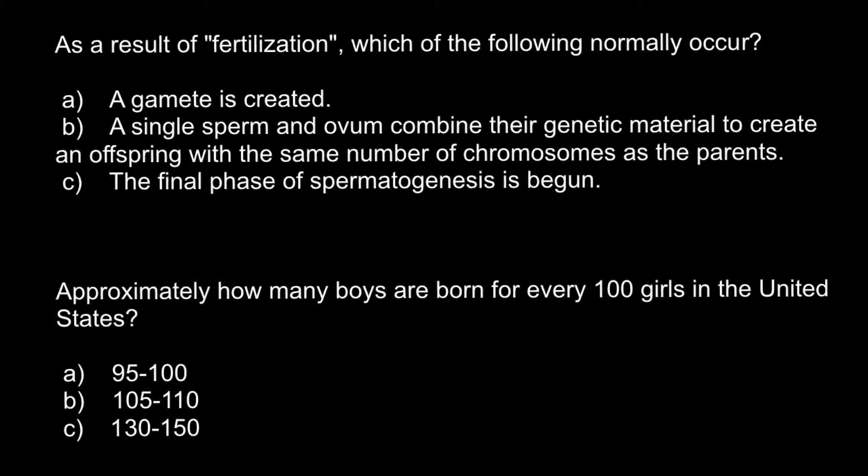Here is the first question: As a result of fertilization, which of the following normally occurs? Answer A: A gamete is created. Answer B: A single sperm and ovum combine their genetic material to create an offspring with the same number of chromosomes as the parents. Answer C: The final phase of spermatogenesis is begun. The correct answer is B.